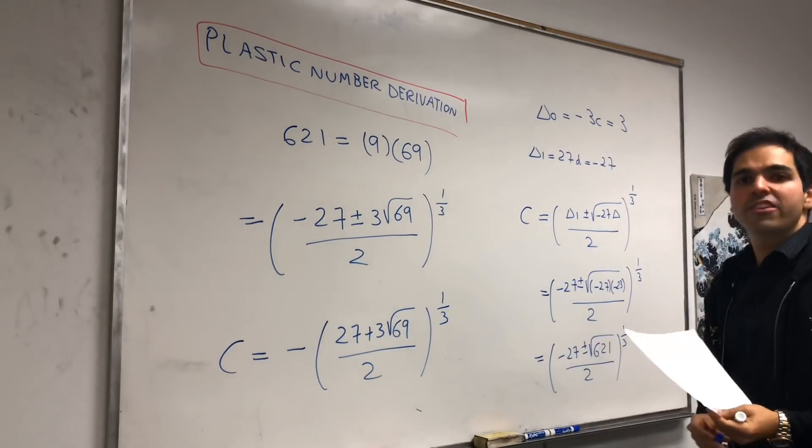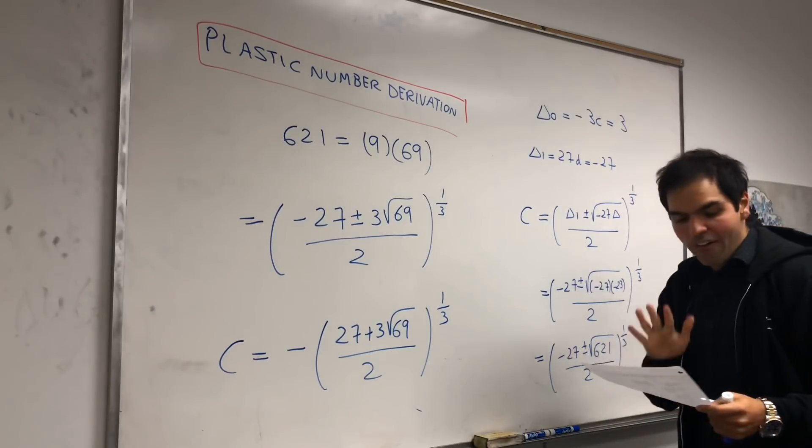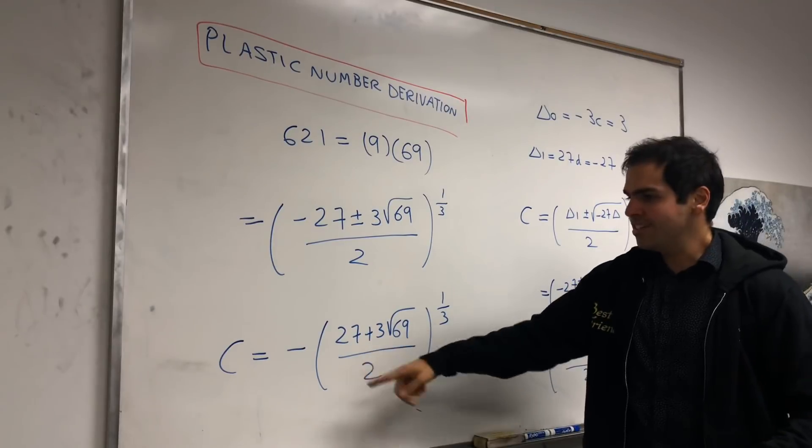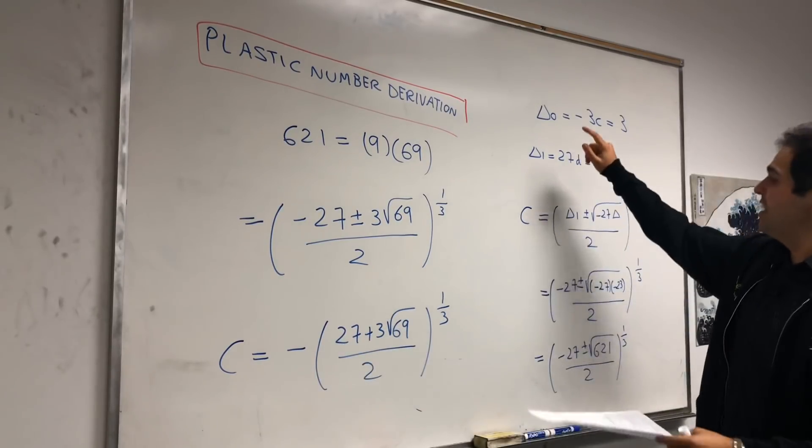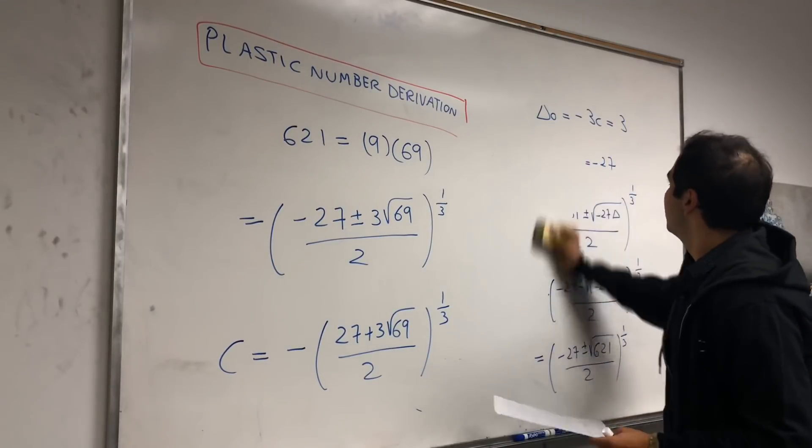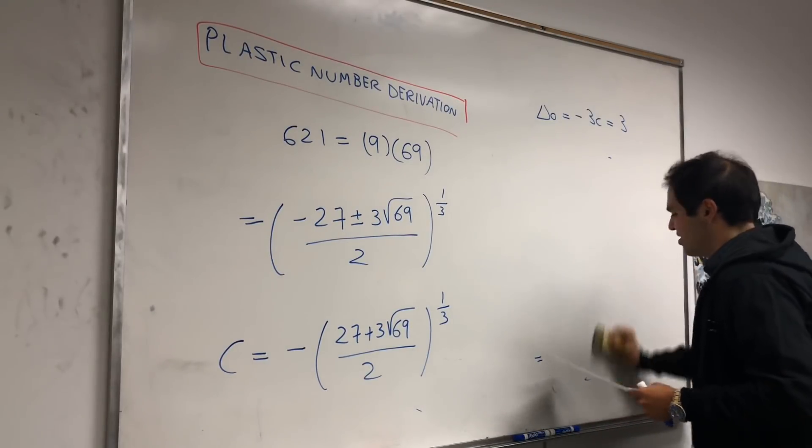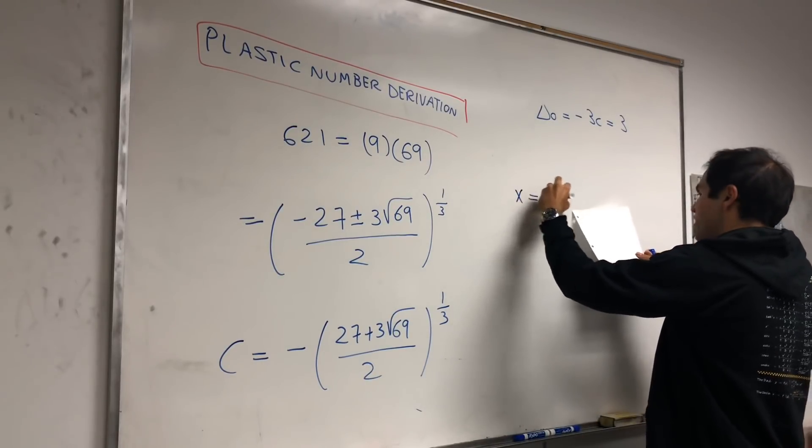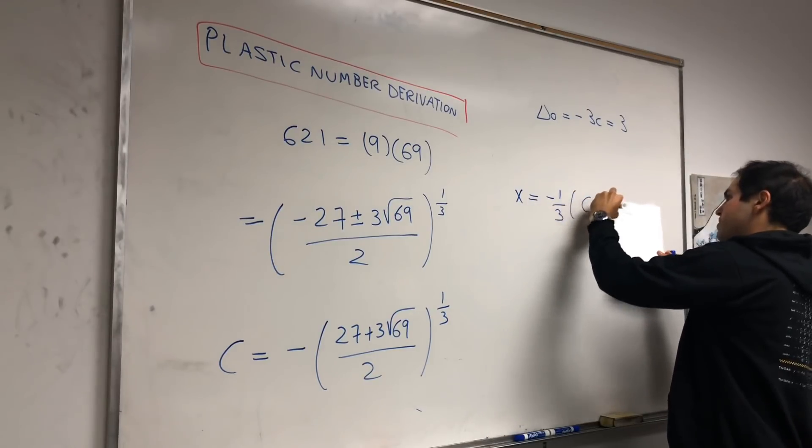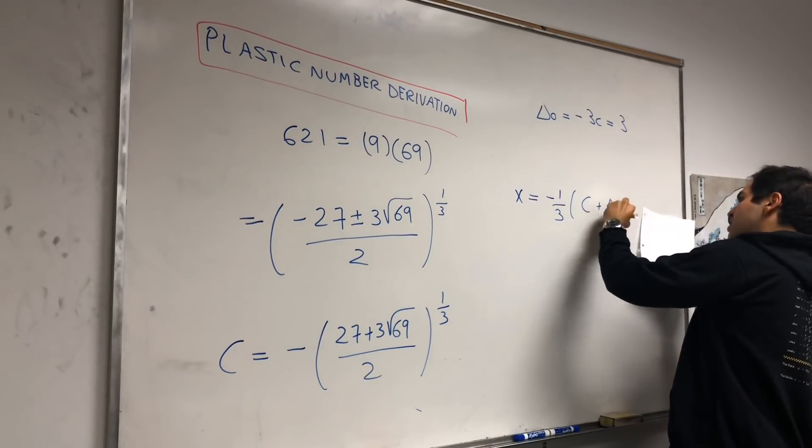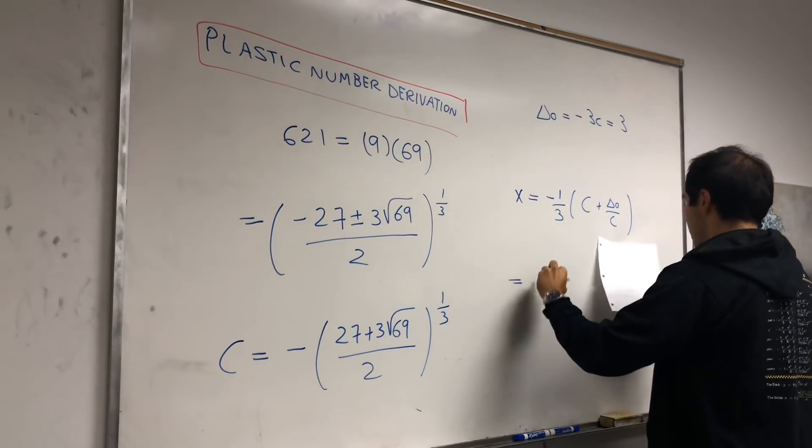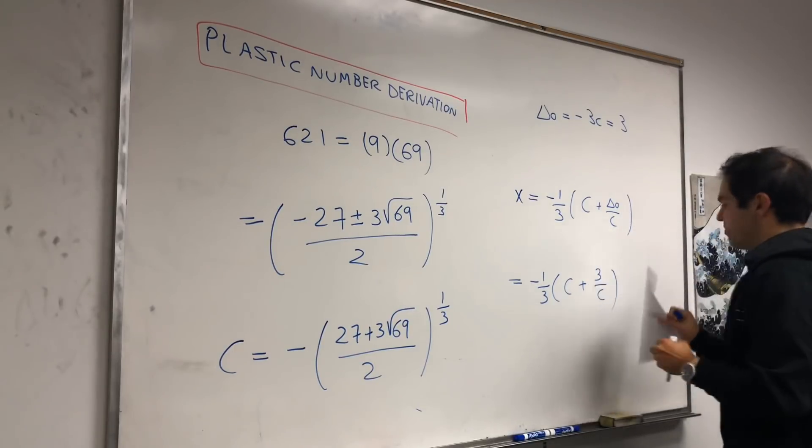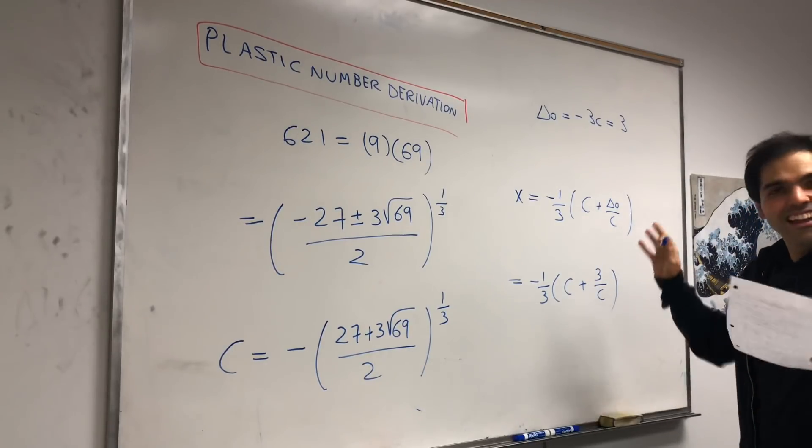And that was our auxiliary function, our helper function. And now, how can we use that to find our X? Well, it turns out, all we need is love and C and our delta naught. Delta naught, remember, is 3. So, now I can actually give you the solution. So, X will be minus 1 third times C plus delta naught over C. And it becomes minus 1 third, in this case, C plus 3 over C.